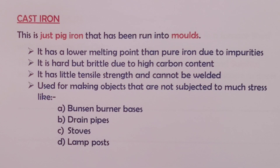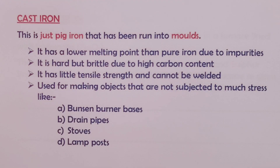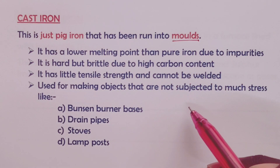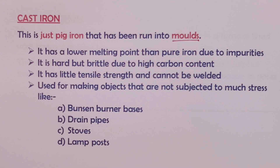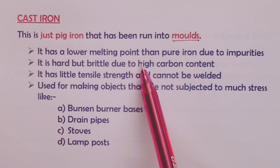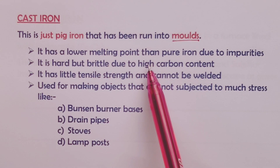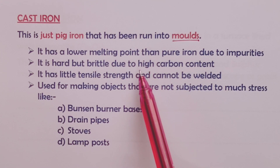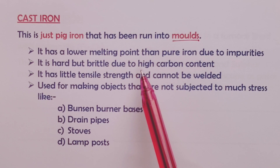We now proceed to cast iron. Cast iron is just pig iron — there is no difference between pig iron and cast iron, except that when you run pig iron into molds, you obtain what we call cast iron. Cast iron has a lower melting point than pure iron because of the impurities present in pig iron from which it is obtained.